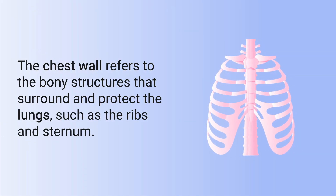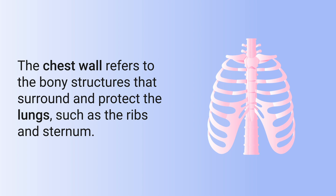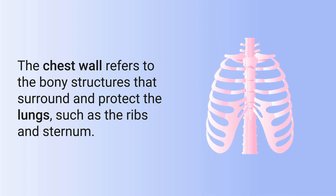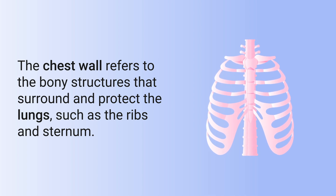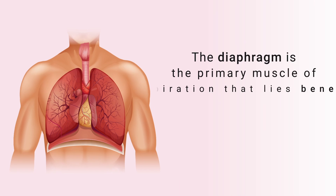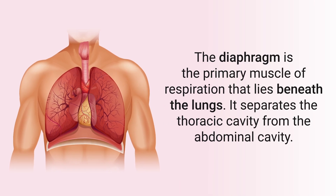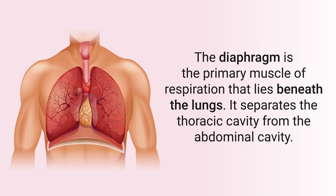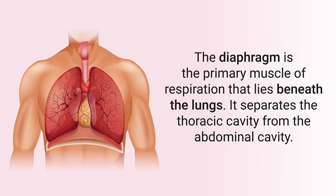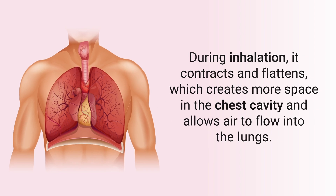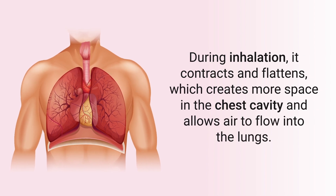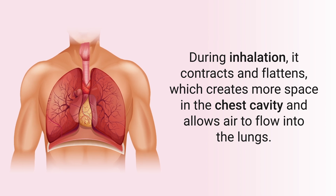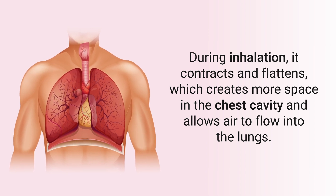The chest wall refers to the bony structures that surround and protect the lungs, such as the ribs and sternum. The diaphragm is the primary muscle of respiration that lies beneath the lungs. It separates the thoracic cavity from the abdominal cavity. During inhalation, it contracts and flattens, which creates more space in the chest cavity and allows air to flow into the lungs.